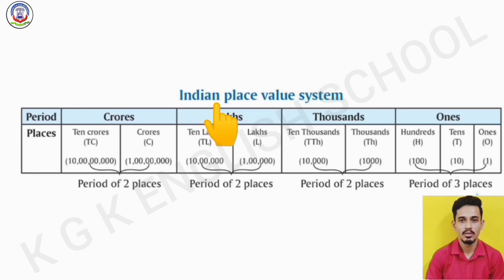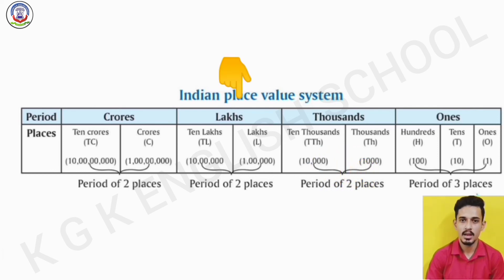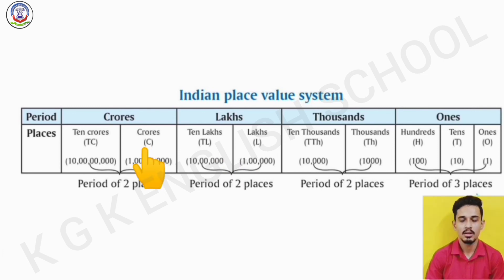Now we can see the Indian place value system chart. In this system we can see periods, which are shown in blue color. These are: ones, thousands, lakhs, and crores. Followed by periods, there are places. In the ones period there are: ones, tens, and hundreds. In the thousands period there are: thousands and ten-thousands. In the lakhs period there are: lakhs and ten-lakhs. In the crores period there are: crores and ten-crores. We can see that there are three places in the ones period, and the remaining periods have only two places each.